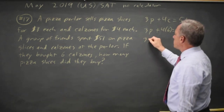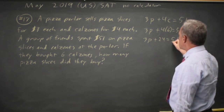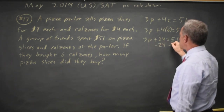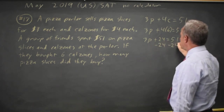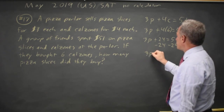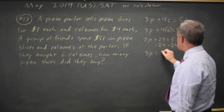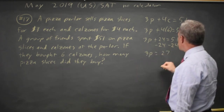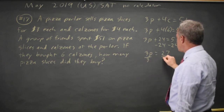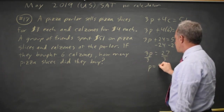3P plus 24 equals 51. If I subtract 24 from both sides, I get 3P by itself. 51 minus 24 is 27. Divide both sides by 3, and I get P equals 9.